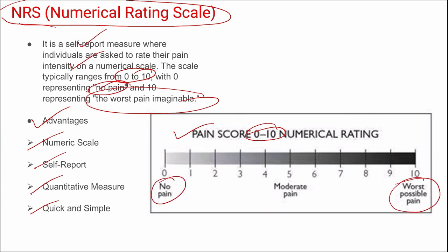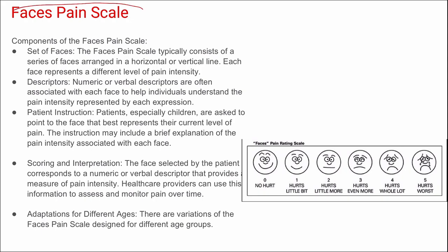A modified version of the NRS is the Visual Analog Scale which uses facial expressions of pain. Next is the Faces Pain Scale, which presents a set of faces with descriptors below, patient instructions, scoring and interpretation, and adaptations for different ages. Scoring ranges between 0 to 5 based on the facial expression selected.